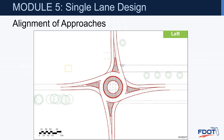With the offset left design, you basically take that roundabout and twist it clockwise a little bit, which gives better control of entry speeds and makes the exits a little more tangential. This is a nice approach to achieve that speed control.